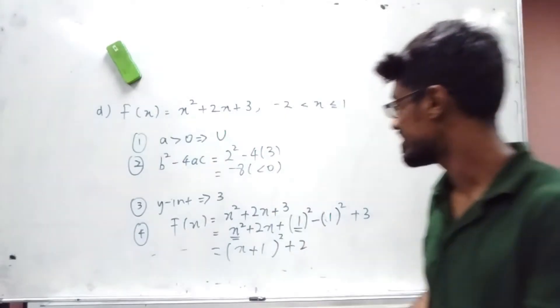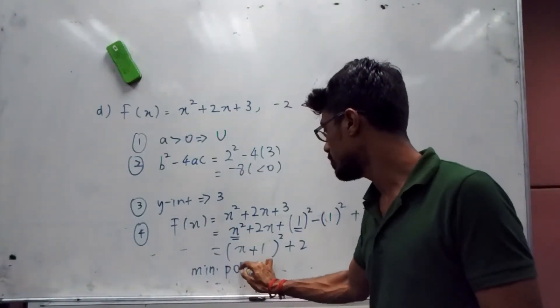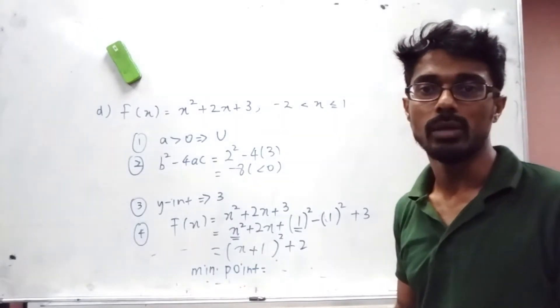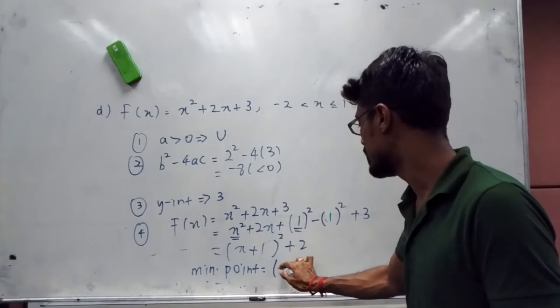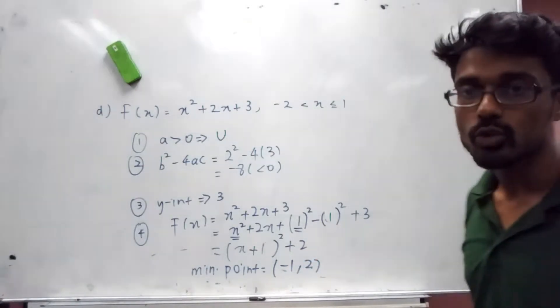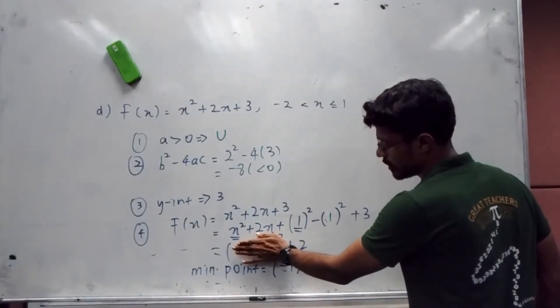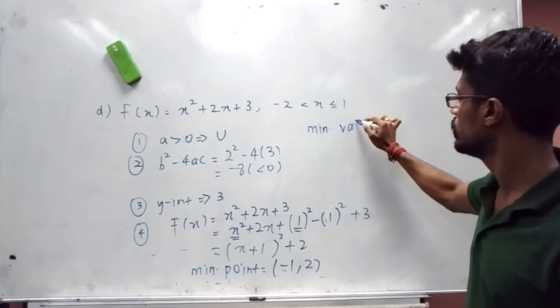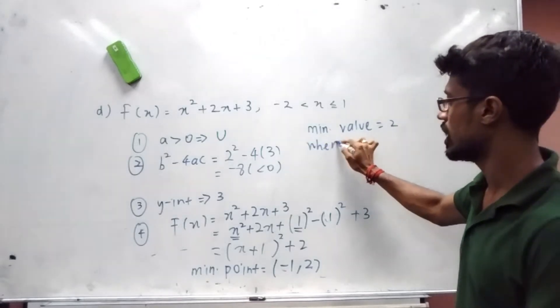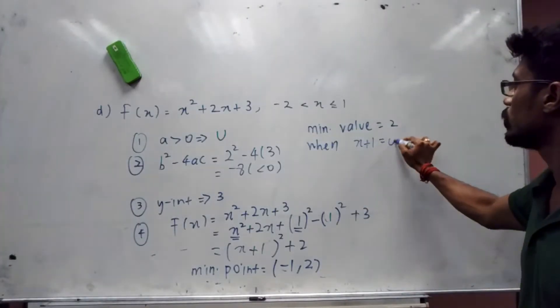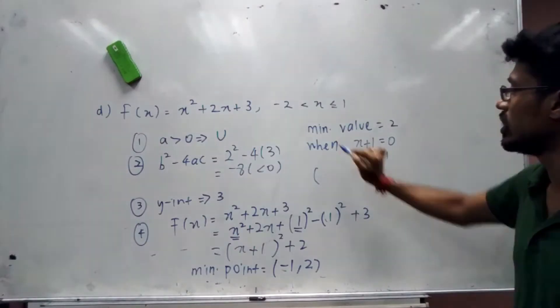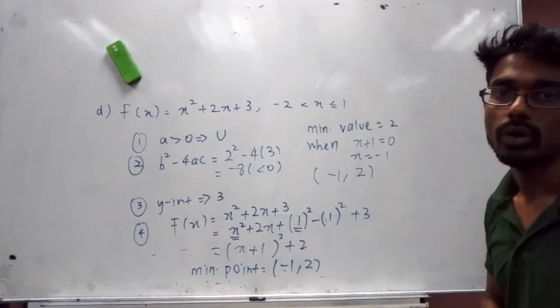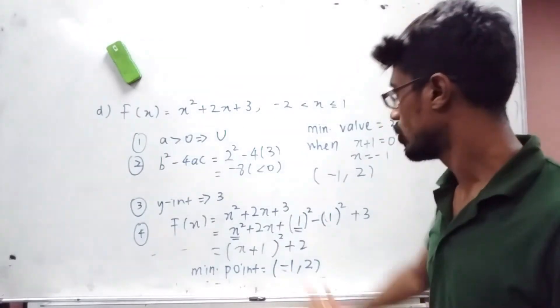From here we can easily tell what is our minimum point. For some of you who already know how to find the minimum point, you can just read out and say it's going to be (-1, 2). For those who are not sure, very simple - just cover here. Whatever remains, that will be the minimum value. So minimum value equals 2. Since you cover this part, you say x + 1 = 0, that gives you x = -1. So when you want to say the minimum point, your x value is -1, and the minimum value is 2. That's how I get my minimum point.